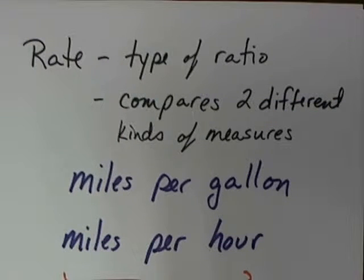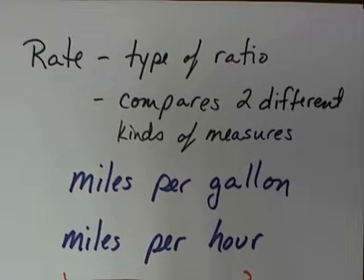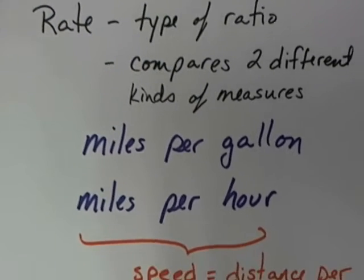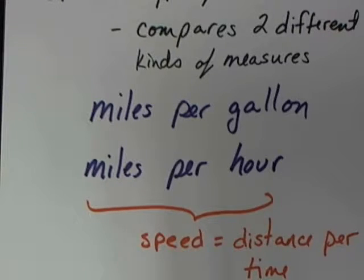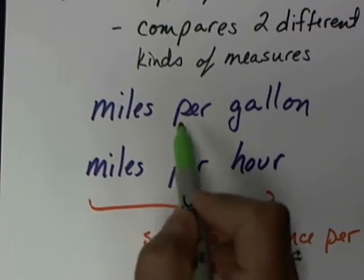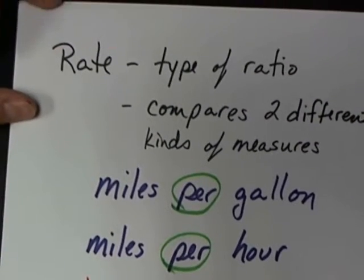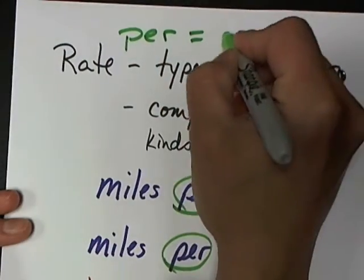A rate is a specific type of ratio. A ratio oftentimes compares two of the same items, like packages delivered versus not delivered. But a rate compares two different kinds of measures, so your labels are going to be different. Examples we deal with all the time are miles per gallon or miles per hour. The word 'per' is important when it comes to ratios, because per means divide.